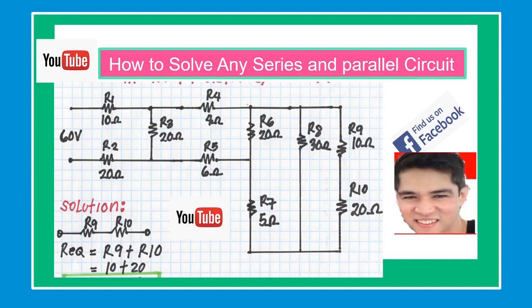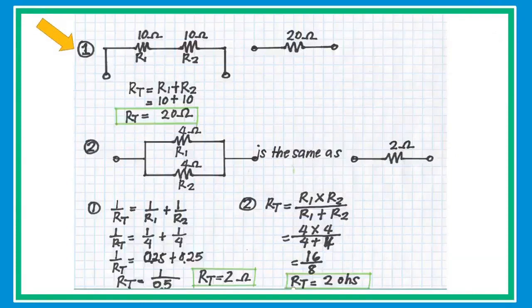In a parallel circuit, the voltage across each component is the same, and the total current is the sum of the currents through each component. In sample problem one, if we have two resistors connected in series — a 10-ohm and a 10-ohm resistor — the equivalent resistance is 20 ohms. Just simply add the two resistors.